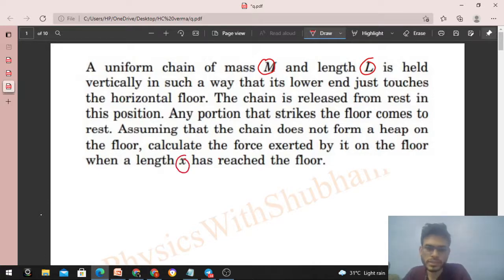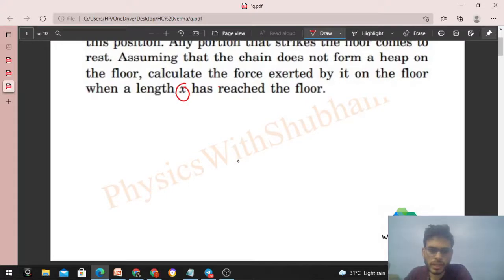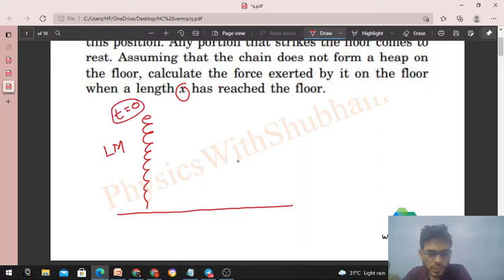So aap dhekho, this tarah se humari paas vertical chain, length L and mass capital M, and this tarah se horizontal floor. At time t equals 0, we release this chain from rest. Now what will happen? Let's say at time t equals t, the x part - x length of the chain - is on the floor. Is tarah se joh x length hai woh aapke floor pe aagyi.